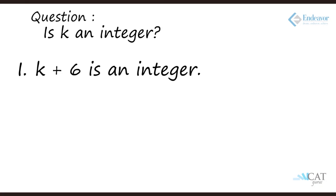Let's look at the first statement: k plus 6 is an integer. If k plus 6 is an integer, if I remove this 6, integer minus integer is what? Integer. It cannot be a decimal point. So k has to be an integer. From the first statement, it's clear that yes, k is an integer.